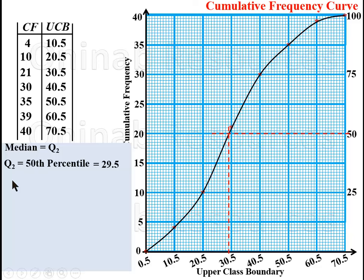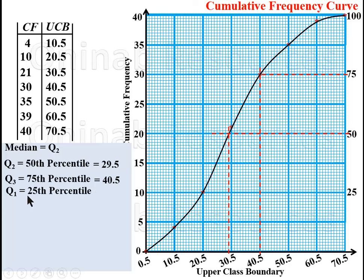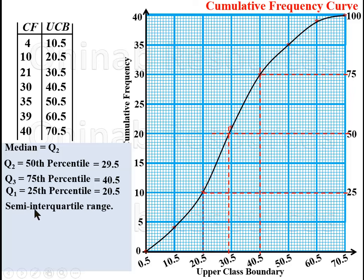Now we find the quartiles. The third quartile Q3 corresponds to the 75th percentile. We draw a line from the 75th percentile to touch the curve, then project downward to read the upper class boundary axis — giving us 40.5. Q1, the first quartile, corresponds to the 25th percentile. Drawing from the 25th percentile to the curve and projecting downward gives us 20.5.